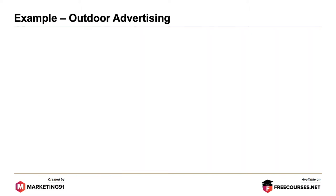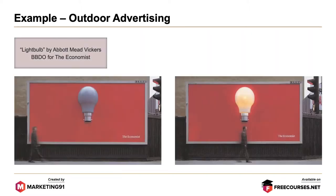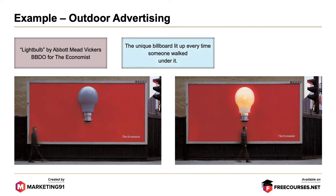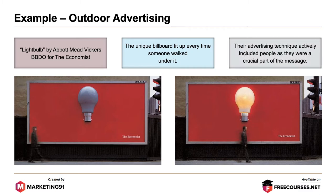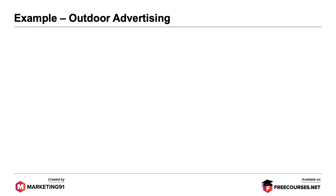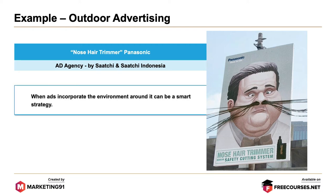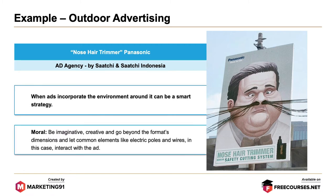Such product placements are indeed obvious ones and used by a lot of relevant companies to advertise their product. Next, outdoor advertising: Light bulb by Abbott Mead Vickers BBDO for The Economist. The unique billboard lit up every time someone walked under it. Their advertising technique actively included people as they were a crucial part of the message. Next, nose hair trimmer by Panasonic, ad agency by Saatchi & Saatchi Indonesia. When ads incorporate the environment around it, it can be a smart strategy. Be imaginative, creative and go beyond the format's dimensions.